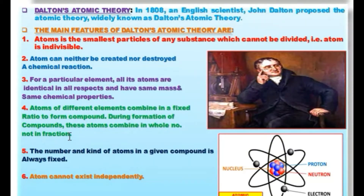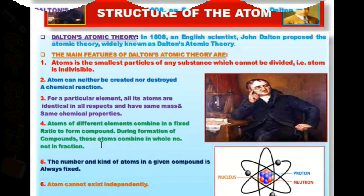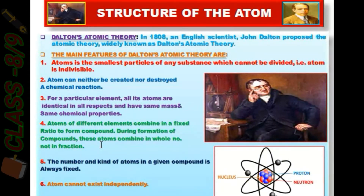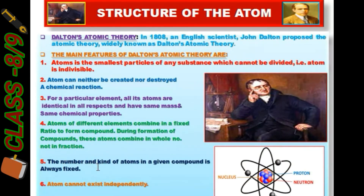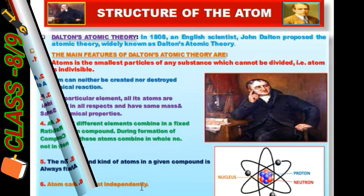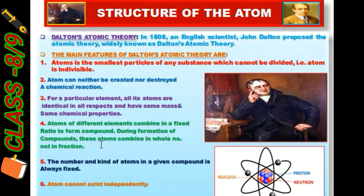During formation of a compound, atoms combine in whole numbers, not in fractions. For example, H2O — the water molecule — has a fixed ratio of 2:1. Number five: the number and kind of atoms in a given compound is always fixed. Number six: atoms cannot exist independently; they always exist in molecular form.